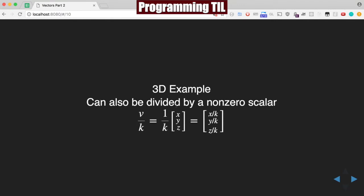A vector can also be divided by a non-zero scalar. So if you have k where k is non-zero, you'll have 1 over k, and you'll see x/k, y/k, and z/k.